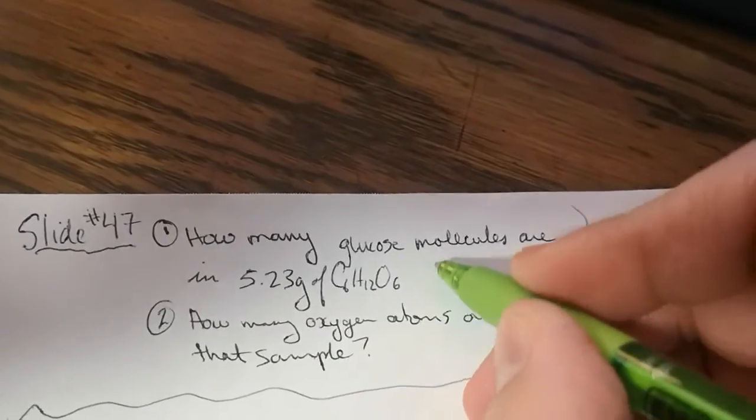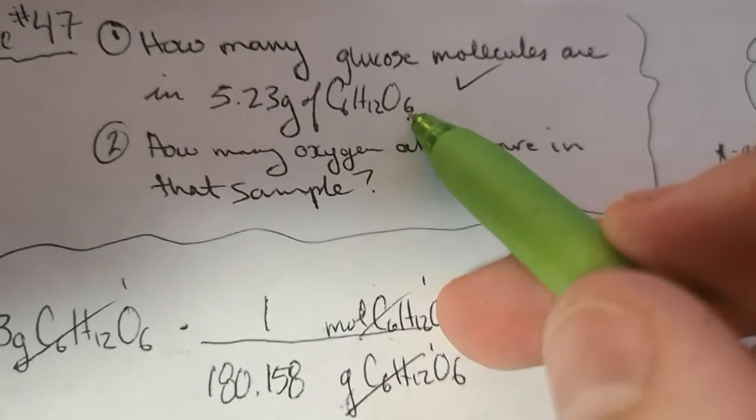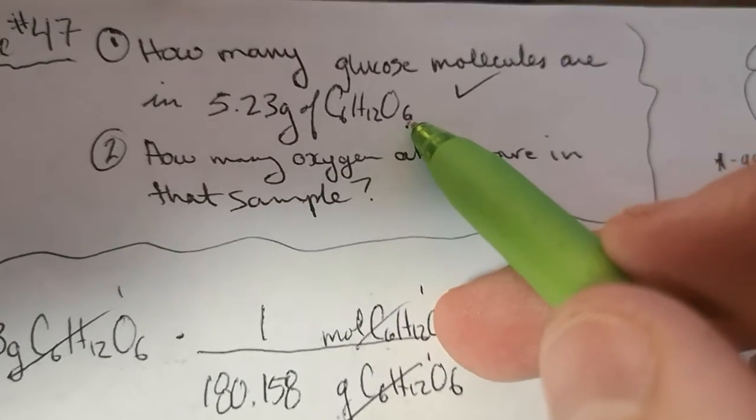So question number one, how many molecules? Check. Next we're asked, how many oxygen atoms are in it? Well, how are we supposed to know how many oxygen atoms are in them? Oh wait, there's 6 oxygen atoms in one molecule.